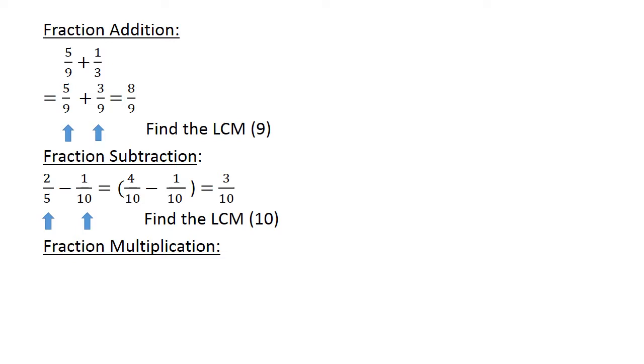Fraction multiplication. 3 over 4 times 3 over 16. You multiply the top part of our fraction. 3 times 3 is equal to 9. And 4 times 16 is equal to 64.